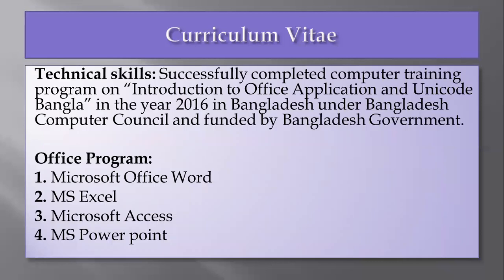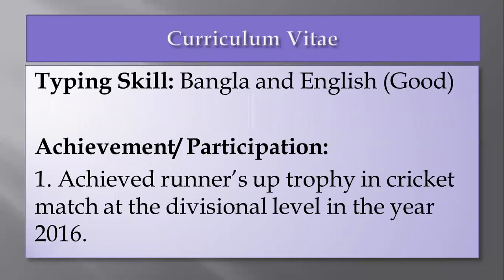Next, write down your technical skills. For example, you may write: 'Successfully completed computer training program on Introduction to Office Application and Unicode Bangla in the year 2016 in Bangladesh, under Bangladesh Computer Council, funded by the Bangladesh government.' Next, give a space and write down the office programs you have learned — those can be Microsoft Office Word, MS Excel, Microsoft Access, MS PowerPoint. Now write down your typing skill — that is, in which languages you are expert in typing, such as Bangla and English.